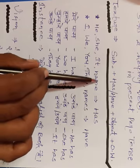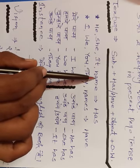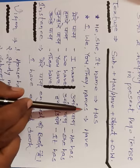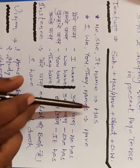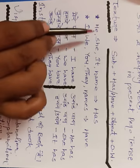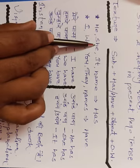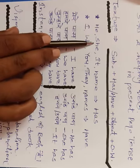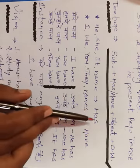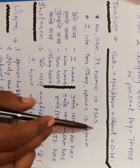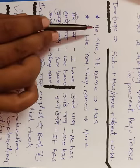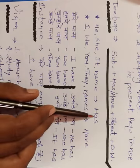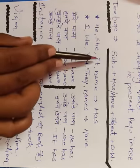Ab main aapko kuch meanings bata deta hoon. Mere paas — I have. Hamare paas — we have. Tumhare paas — you have. Ya aapke paas — you have. Unke paas — they have. Usi tarike se: uske paas (kisi boy ke liye) — he has. Uske paas (kisi girl ke liye) — she has. Aur isme ya usme — it has. Ek baar phir se: mere paas — I have, tumhare paas — you have, hamare paas — we have, unke paas — they have, uske paas (boy) — he has, uske paas (girl) — she has, aur isme/usme — it has.